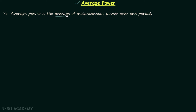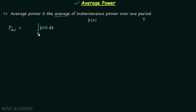Average power is the average of instantaneous power over one period. I will represent the average power by uppercase P sub av, and it is equal to the average of instantaneous power over one period. Let's say the period is uppercase T. To find the average we will integrate P(t) with respect to time t from zero to T, that is over one period.